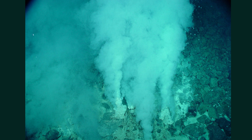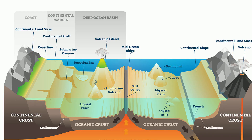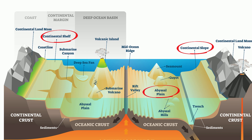In summary, the ocean floor is a vast area made up of various landforms: the Continental Shelf, the Continental Slope, and the Continental Rise. There are also the Abyssal Plain, which is the flattest place on earth, as well as seamounts, ocean ridges, and ocean trenches.